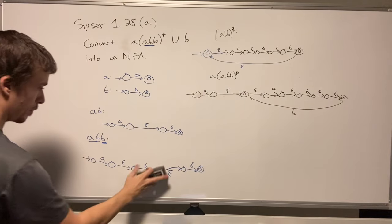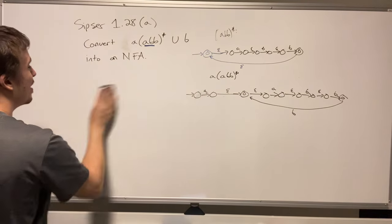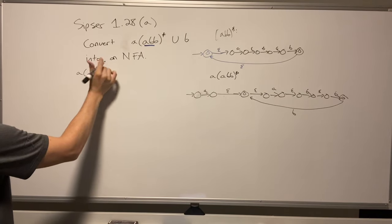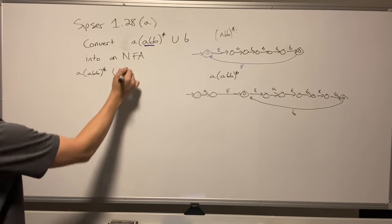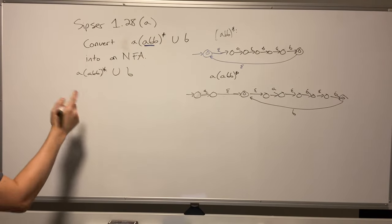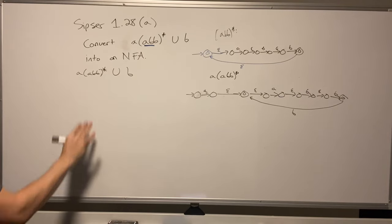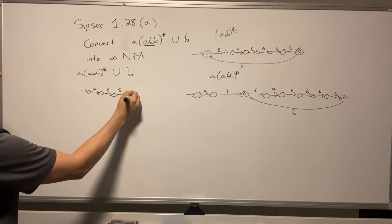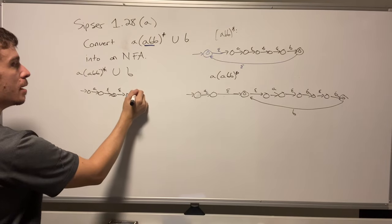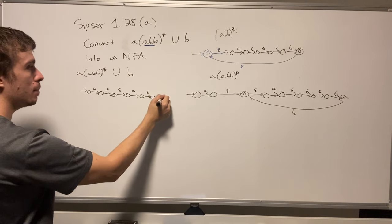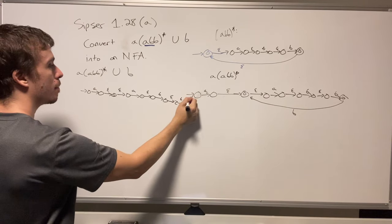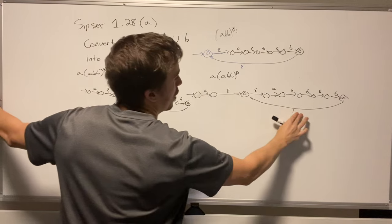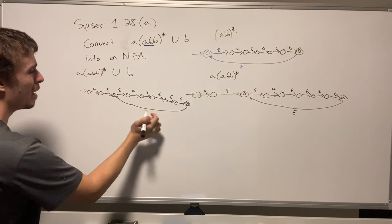Now we need to complete the whole thing — let's do 'a·abb*' union 'b'. I'll erase the partial drawing since this will be a rather big machine. For union, I arrange the two machines on top of each other. The top machine is the 'a·abb*' machine, with its internal epsilon transitions and final state, and the second machine is just 'b'.